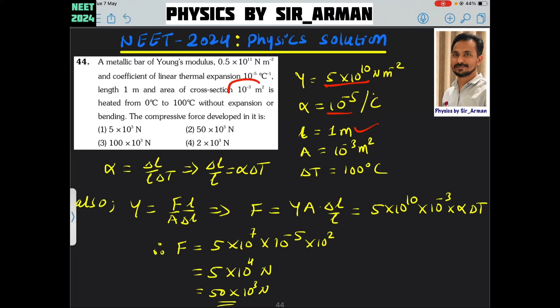Length 1 meter is given, area of cross section 10 raised to minus 3, and the change in temperature is 100 degree Celsius.